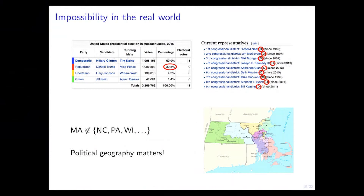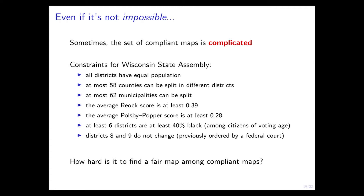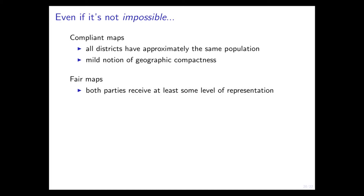Sometimes the set of maps that comply with the law is complicated. These are the specifications required when you do redistricting for the Wisconsin State Assembly, and there are a lot of things you have to satisfy simultaneously. I want to think about the space of compliant maps and find a member of that set that happens to be fair. How hard could it be to find a fair map amongst the set of compliant maps? The answer is: it's hard. In order to formalize that, I have a model where a compliant map must satisfy the Constitution, shapes must not look weird under some notion of geographic compactness, and fairness again means 49% of the vote implies at least 1% of the seats. It's a weak ask, and it's hard — it happens to be NP-hard.